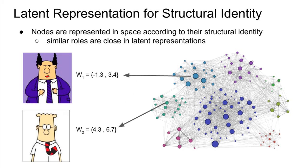Using this similarity metric, nodes are actually going to be represented in space according to their structural identity, in the sense that we're going to learn representations that capture the identity of the nodes. Similar roles should be placed together close to each other in the latent representation.